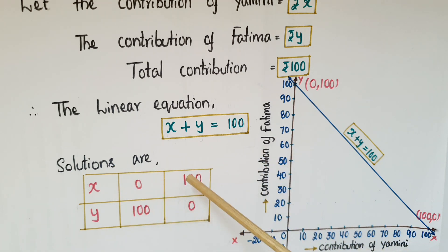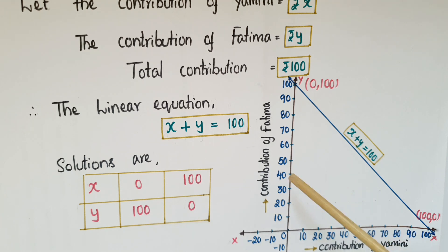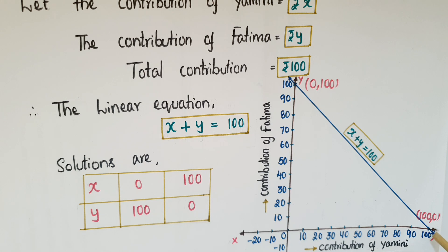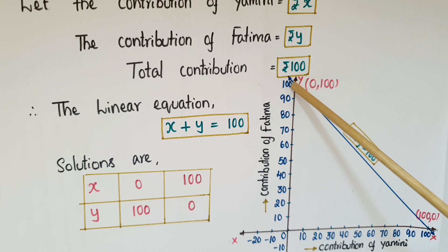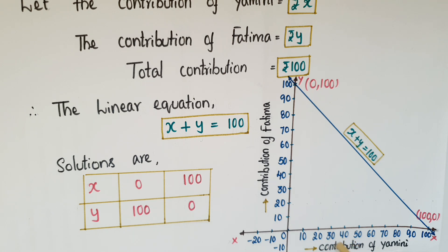If x equals zero then y equals one hundred; if y equals zero then x equals one hundred. So the solutions are (0, 100) and (100, 0). Take the contribution of Yamini on the x-axis and Fatima on the y-axis. Mark the points (100, 0) and (0, 100) and join them to get the line x plus y equals one hundred. Since 100 is a large number, you can mark each interval on the axes as 10 units.